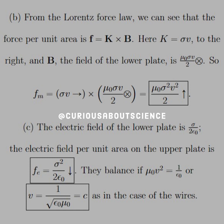So now for part C, the electric field of the lower plate is sigma over 2 epsilon naught. We found that back in chapter 2 and 3. And the electric field per unit area, which we can do the same thing,